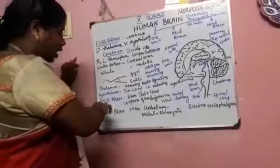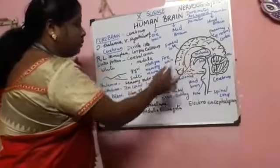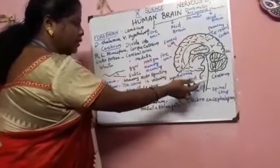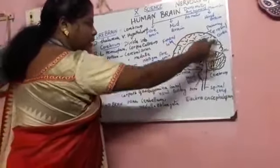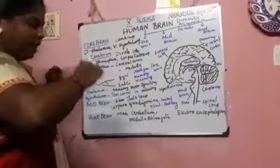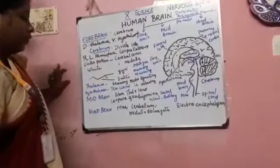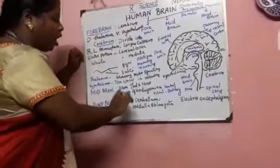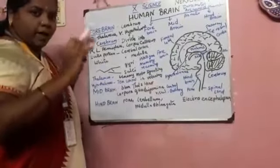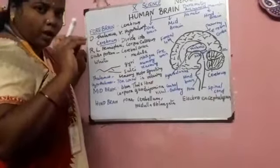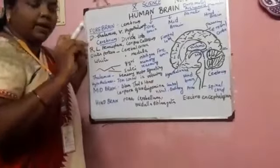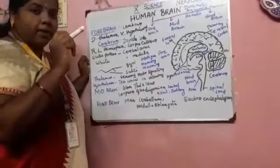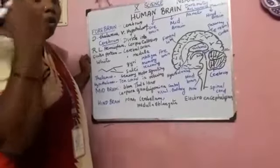The midbrain is present between the forebrain and the hindbrain. It is made up of a substance called corpora quadrigemina. The midbrain is able to control the visual and auditory functions.